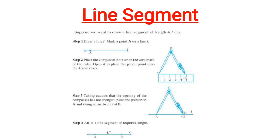Now taking precaution that the opening of the compass has not changed, place the pointer on A and swing an arc to cut the line L at B. Line segment AB is the line segment that we required and it will be of length 4.7 cm. This is how we can construct a line segment.